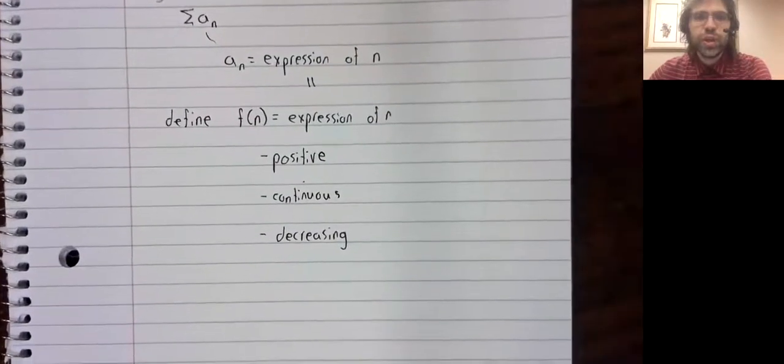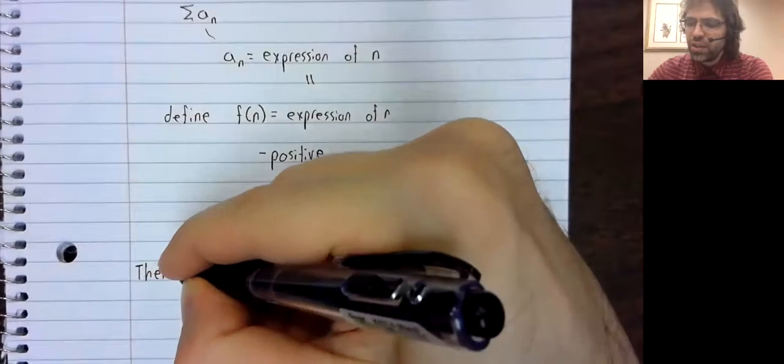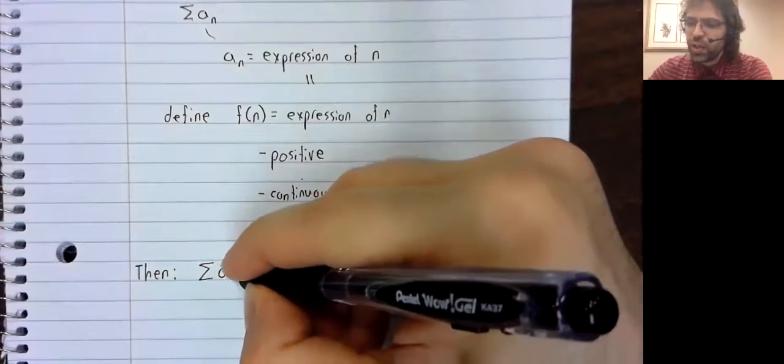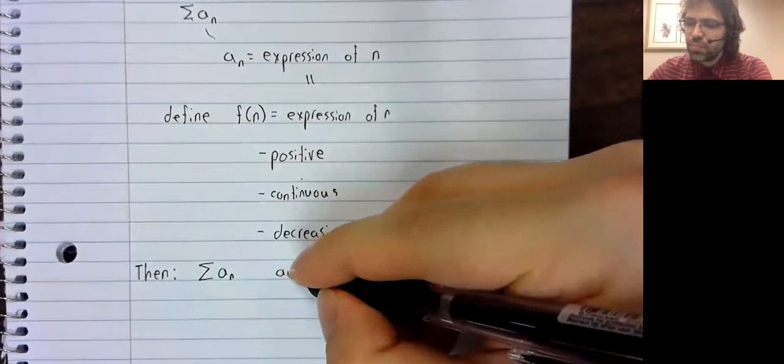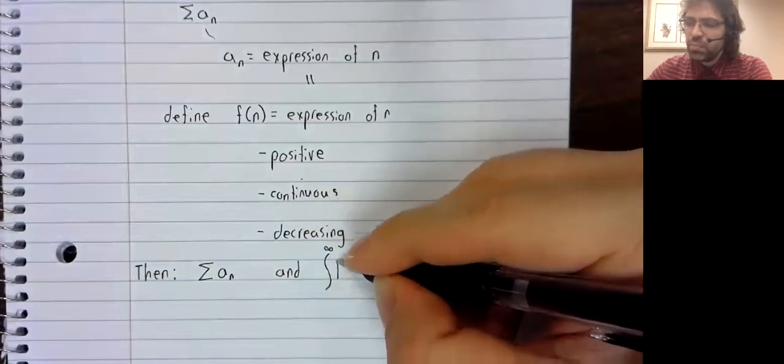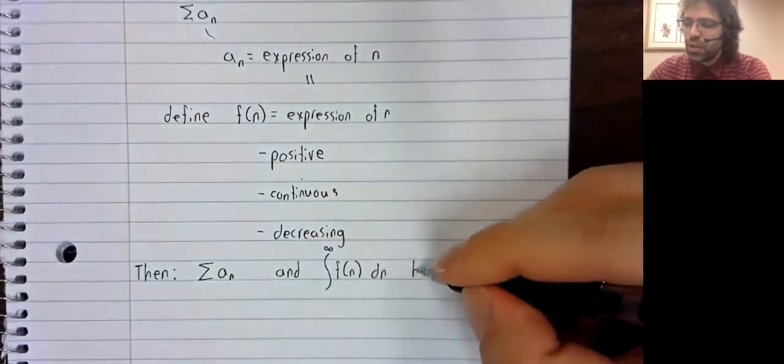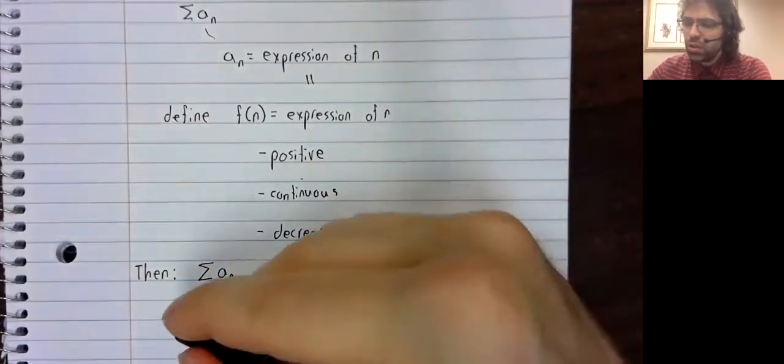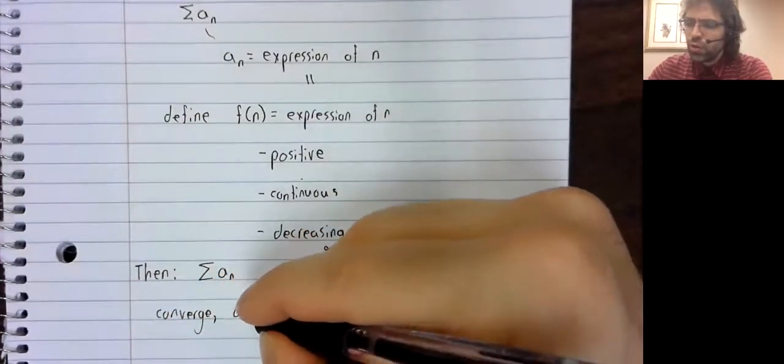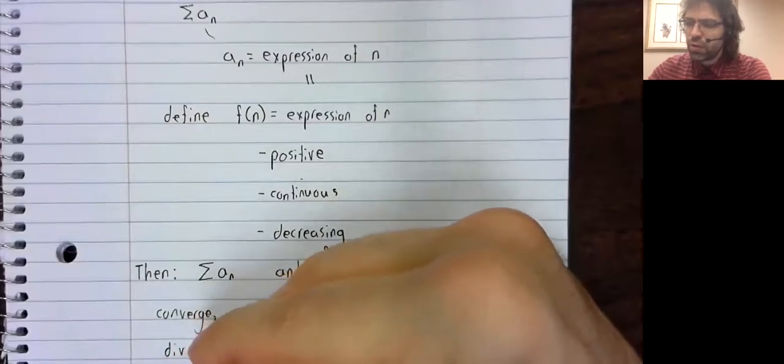If this is the situation we're in, then this series we're looking at and this improper integral either both converge or both diverge.